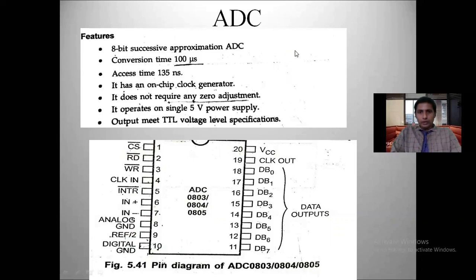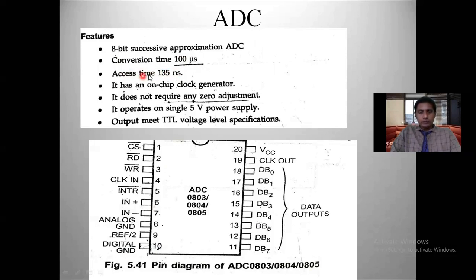The first feature is that it is an 8-bit successive approximation ADC, meaning the analog input is converted into 8-bit digital output. The second point is the conversion time is 100 microseconds — converting analog data into digital takes up to 100 microseconds. The accessing time is 135 nanoseconds, meaning the analog input takes 135 nanoseconds to be accessed.